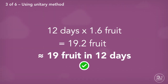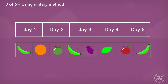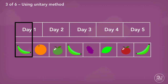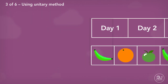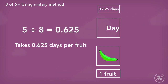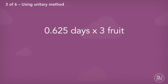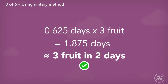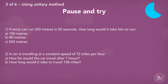Jack eats just over 19 fruits in 12 days. Slightly different for the second part of the question, as we are not looking for the number of fruit, but the number of days. Therefore, we find how long it takes to eat one fruit. This is calculated by dividing both sides by 8. It takes Jack 0.625 days to eat one fruit. So to find out how many days it takes to eat 3 fruit, we multiply 0.625 by 3, which equals 1.875 days — just under 2 days. Pause and have a go at these questions.